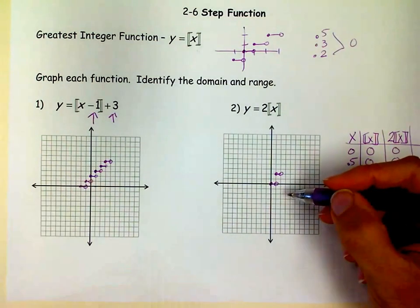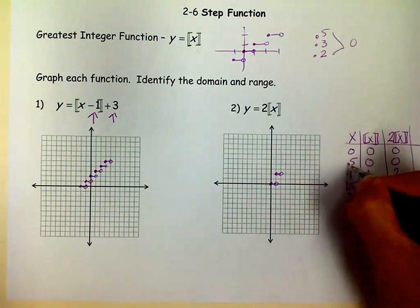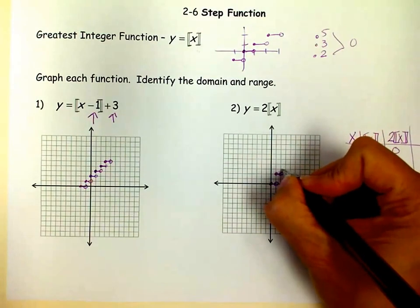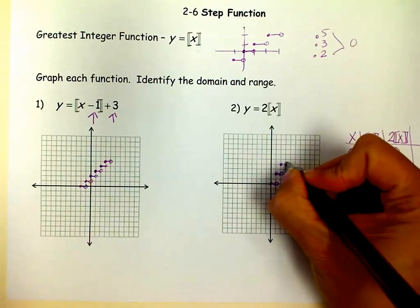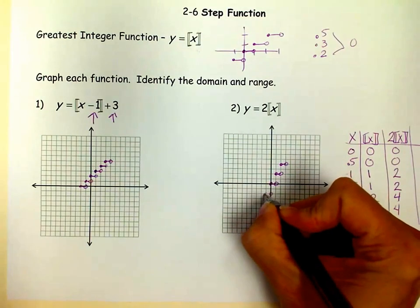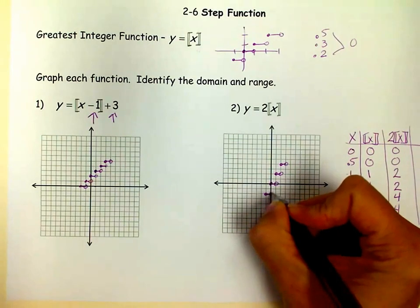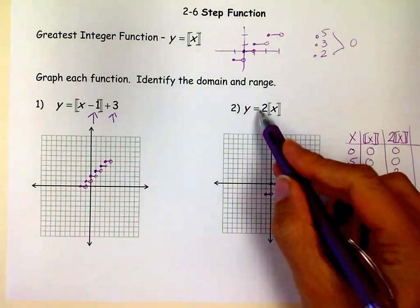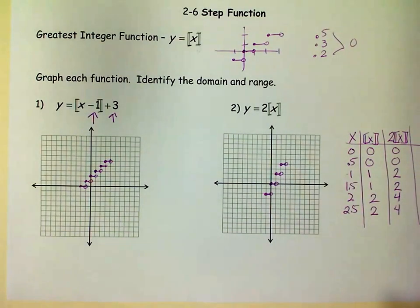You'll see how it vertically stretched it? Instead of being a gap of 1, like it traditionally is, it's a gap of 2 because of that 2 out there. So that might be helpful. And if I was going this way, it would be the same way. Just a gap of 2. And so, that is how you'd graph the 2 times the greatest integer of x.